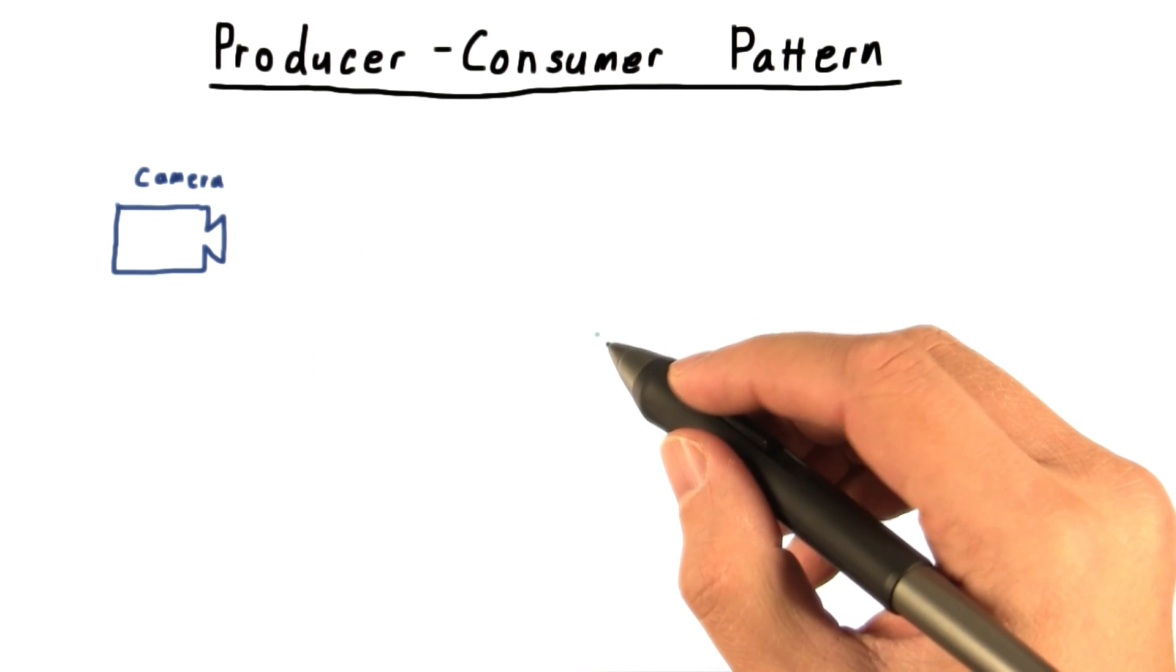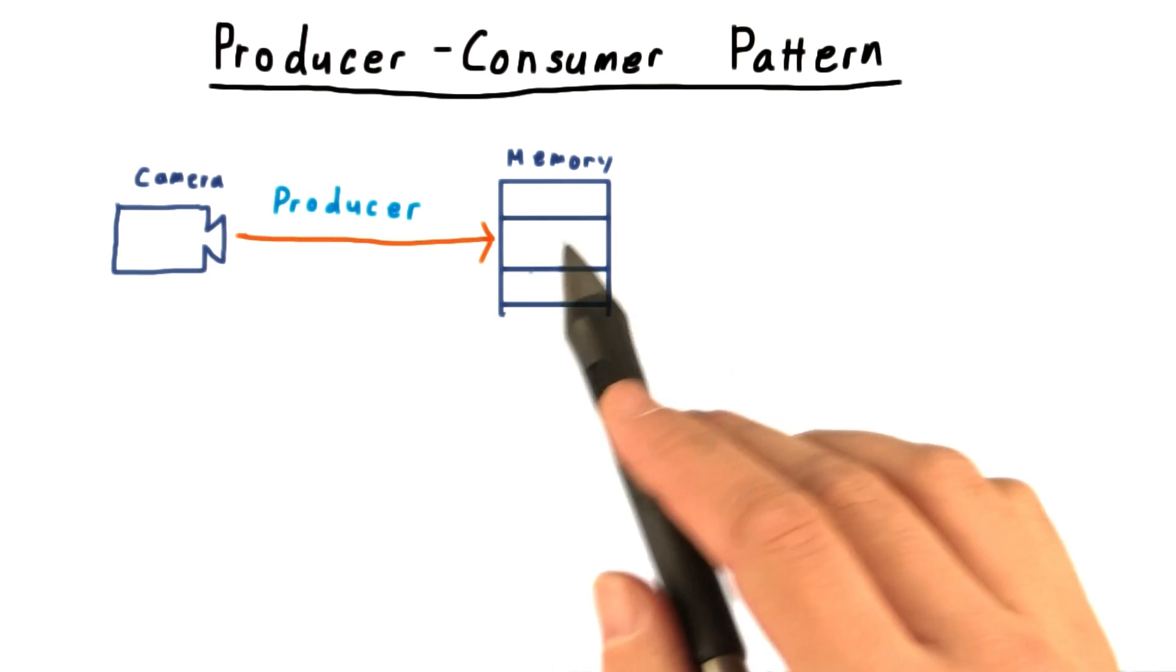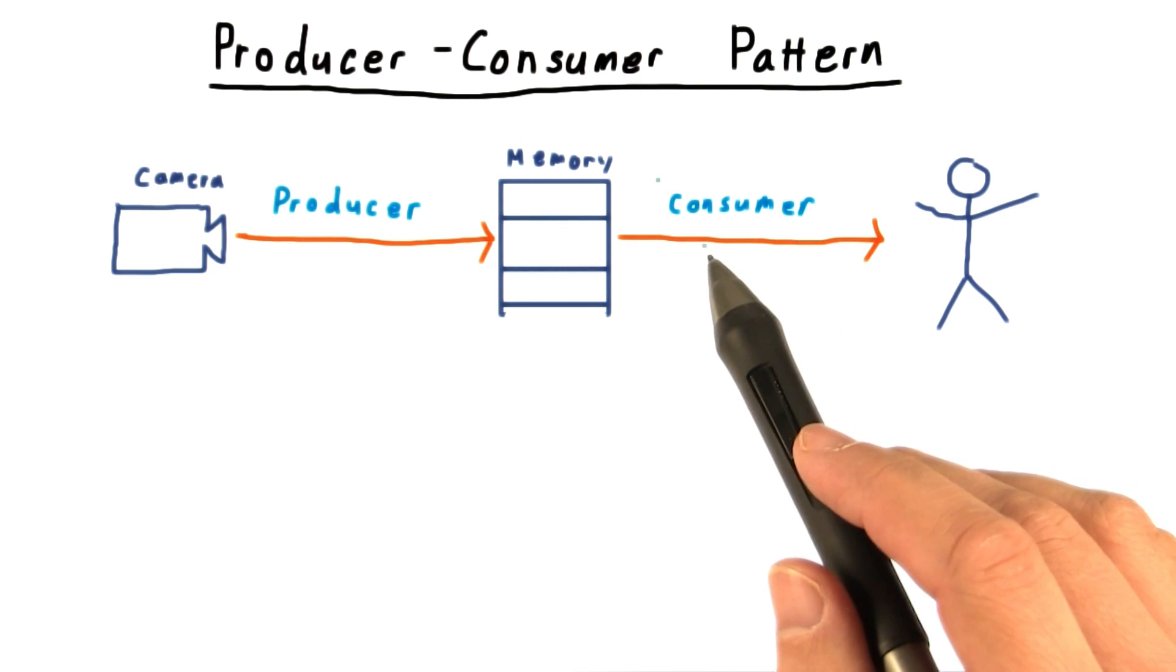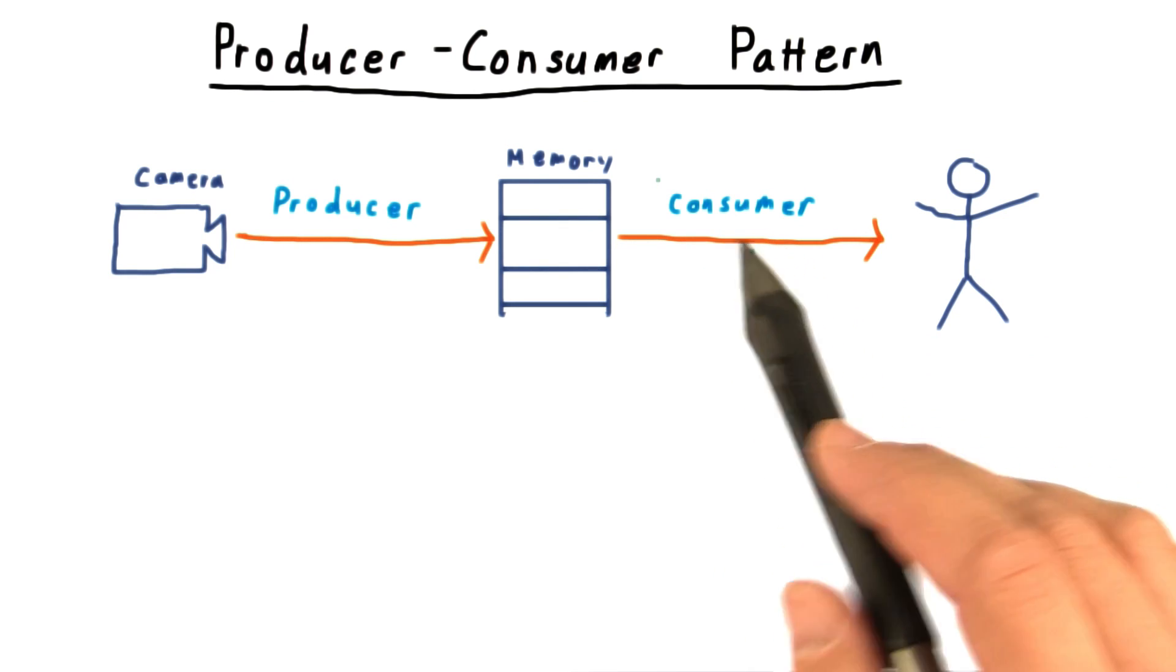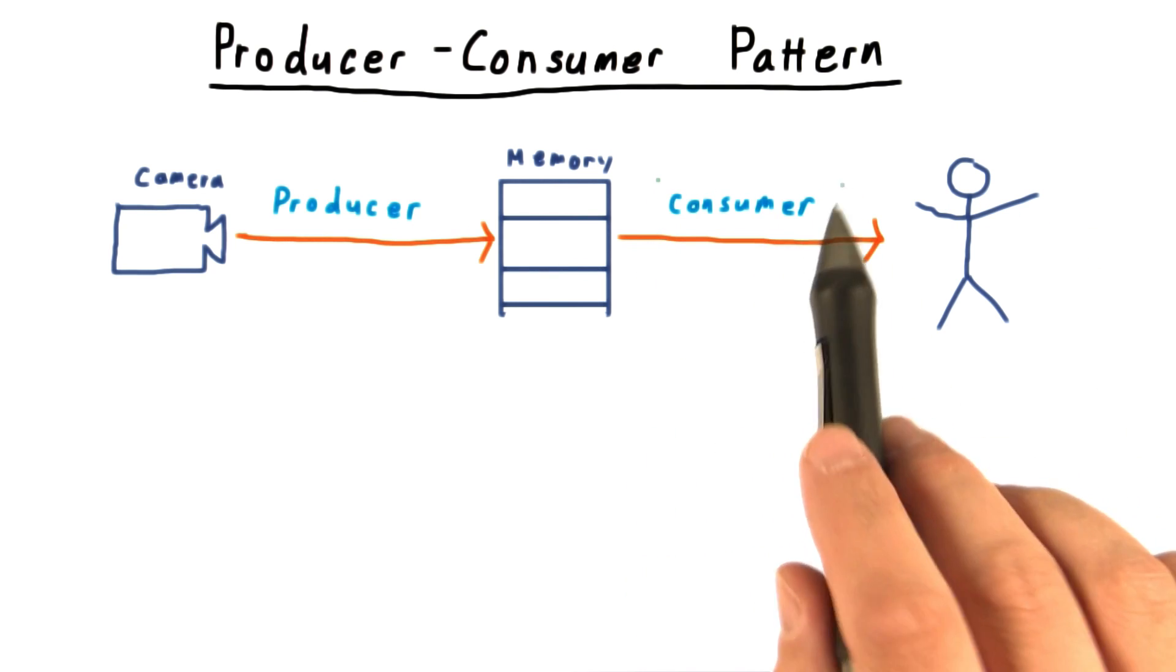We can then break the computation down into two pieces. One is to get the picture from the camera into the memory. We'll call this the producer task. And the other task is to analyze the picture to figure out where all the people are and pass this information on to the train planner or whoever may need it. We'll call this the consumer task.